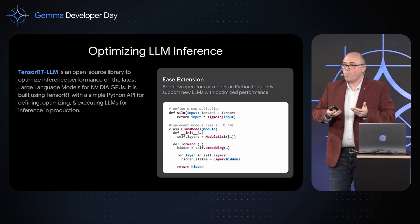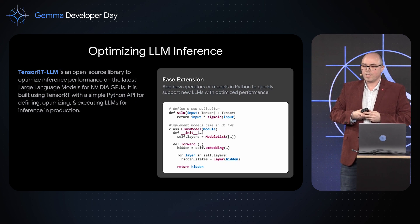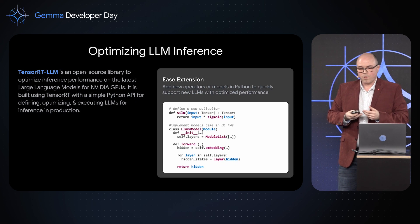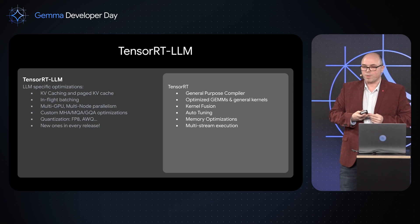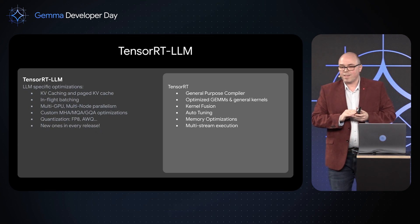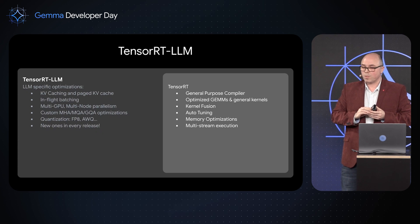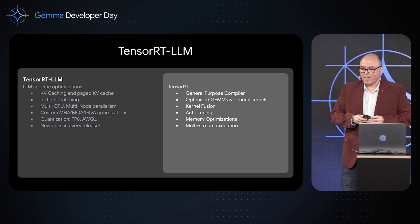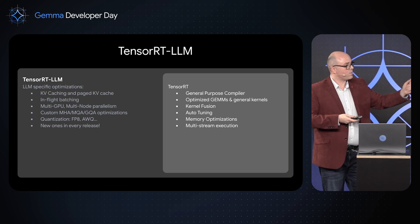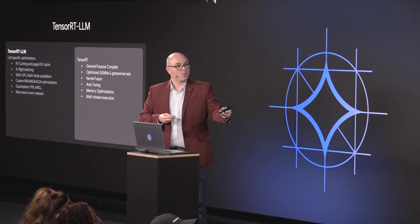The tool we've been working on for the last two and a half years is called TensorRT-LLM. It is an open source tool you can download from GitHub today, and it allows you to take open source models or your own large language models and transformer architectures and optimize them for production deployment with a relatively easy Python API. It provides out of the box robust KV caching, in-flight batching, multi-GPU and multi-node deployment, custom kernels for multi-head attention, quantization, and many other critical features.